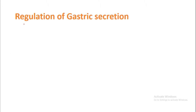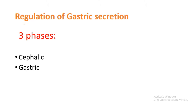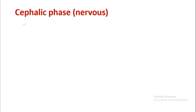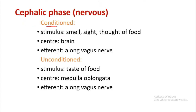Regulation of gastric secretions — there are three phases: cephalic phase, gastric phase, and intestinal phase. The cephalic phase is mainly a nervous phase. It involves conditioned reflex, where the stimulus of food goes to the brain center and efferent signals travel along the vagus to increase stomach secretions, and unconditioned reflex, where the stimulus is the taste of food, the center is the medulla oblongata, and efferent runs along the vagus to release gastric juice.